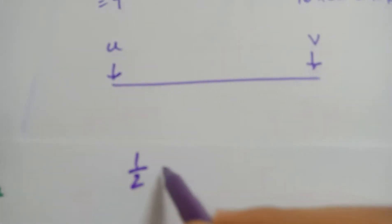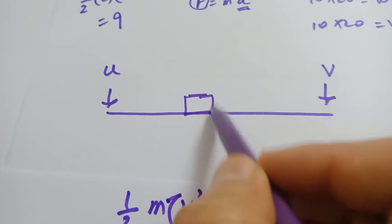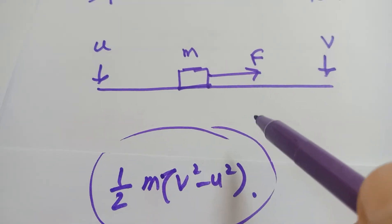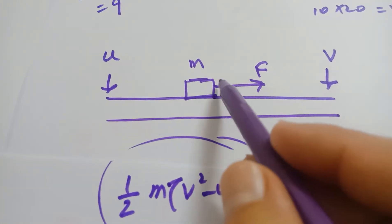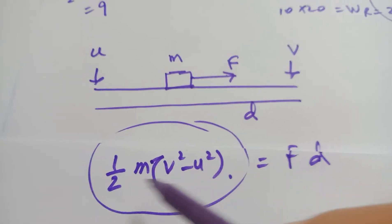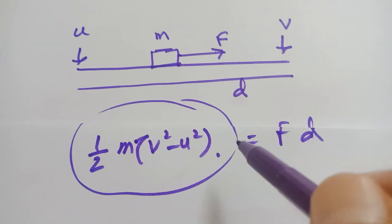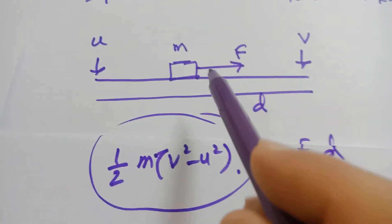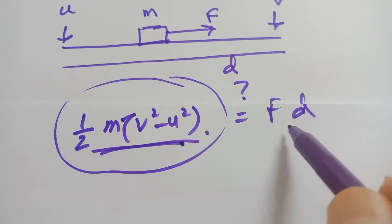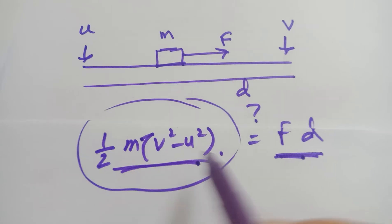Now consider another situation. There is an initial speed U and a final speed V, and you find the change in kinetic energy, which is ½M(V² − U²). There is an object of certain mass being pulled by a force F over a distance D. This change in kinetic energy should equal the work done FD. If you find that the change in kinetic energy is not equal to the work done by the given force F, then you must be sure there is definitely another force — which would be the frictional force.